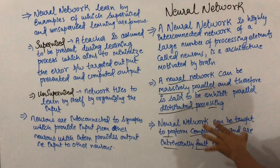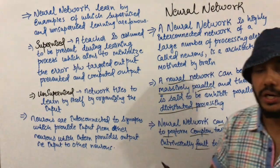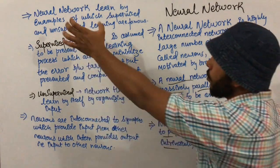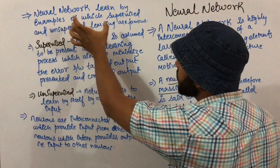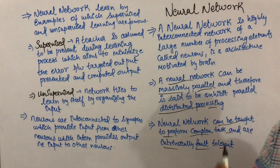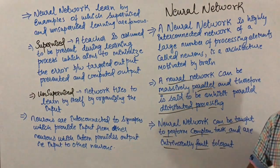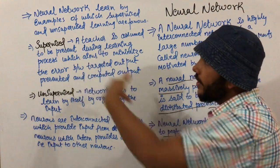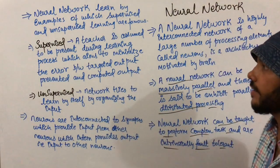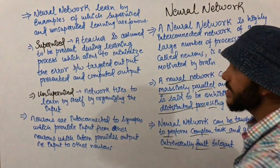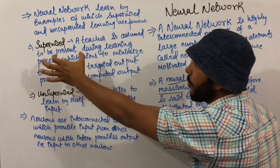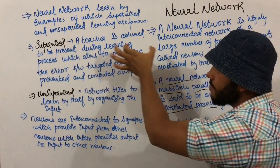Neural networks learn by examples, of which supervised and unsupervised learning are the most well-known. There are two different techniques by which a program learns in neural networks: first is supervised learning, and second is unsupervised learning.